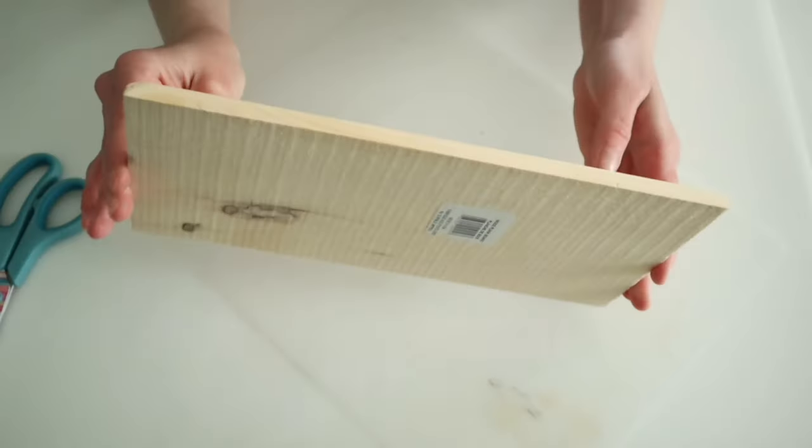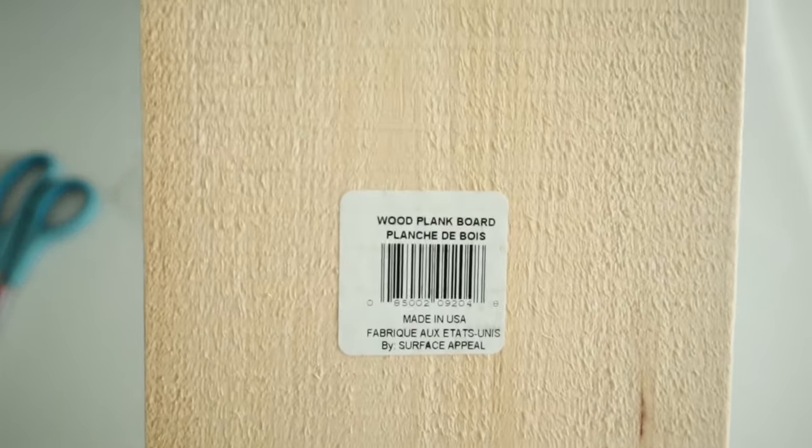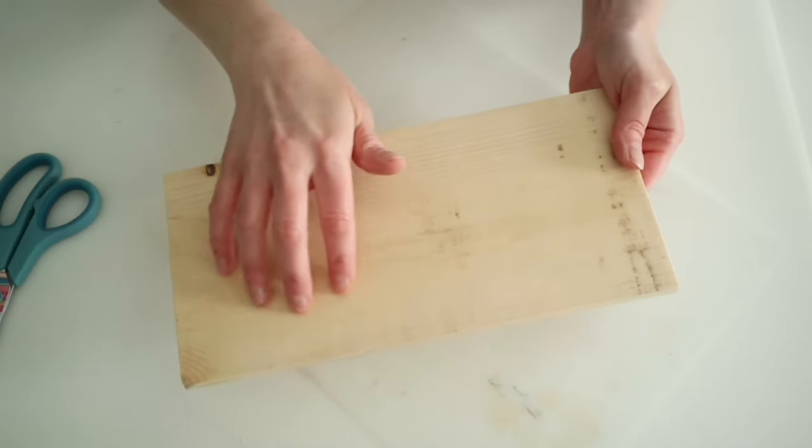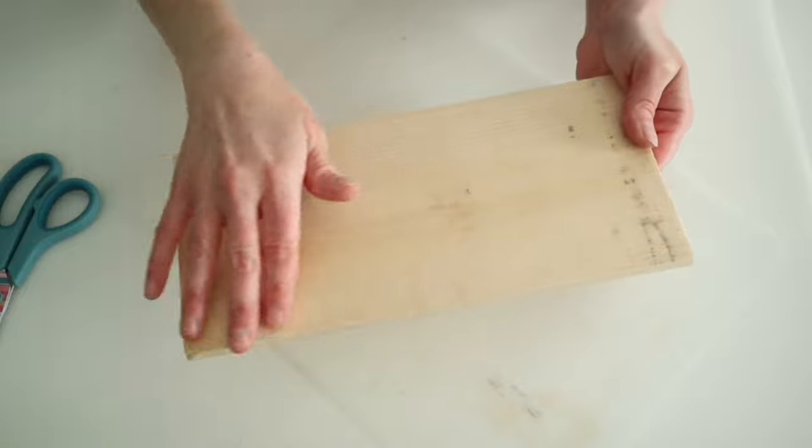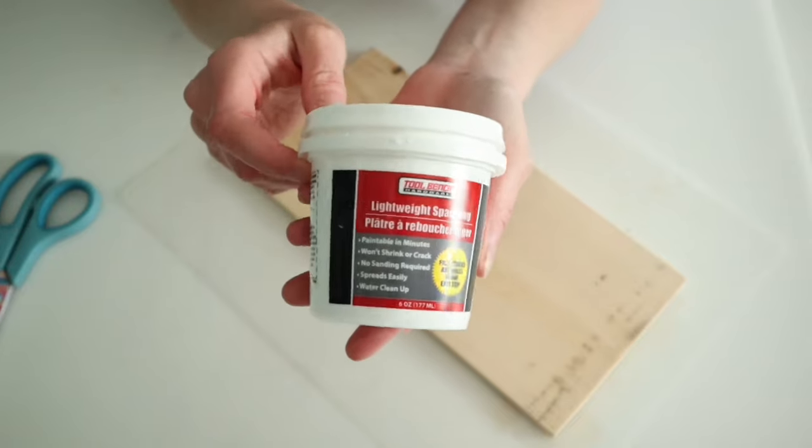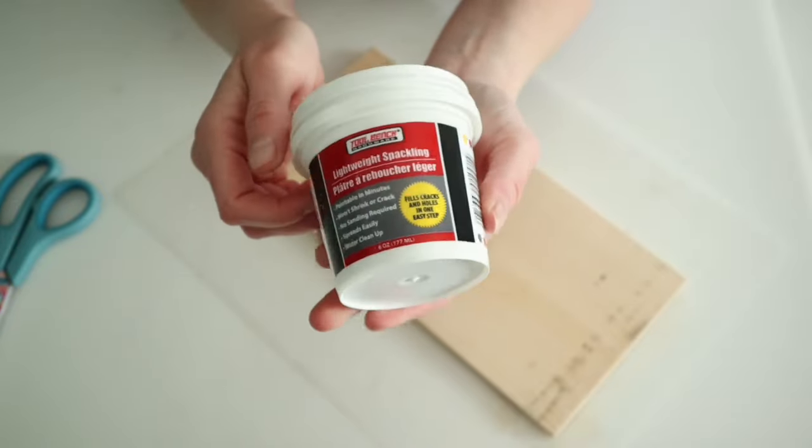For this first project, we're going to be using one of these wood plank boards that I picked up at Dollar Tree and we're just going to go ahead and give that a light sanding to take off all the little grains. And of course, we are going to be using some of Dollar Tree spackling.